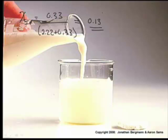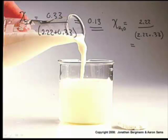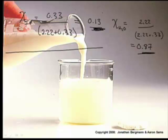Should we talk about the mole fraction of water? They'll add up to 1. That'll just be 2.22 over 2.22 plus 0.33, or you could subtract from 1 to get the same answer. It would be 0.87. Because 0.13 and 0.87 add up to 1.